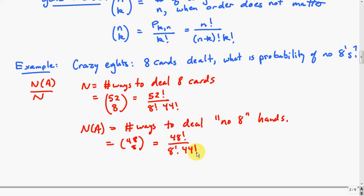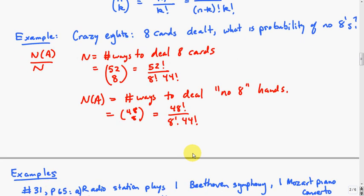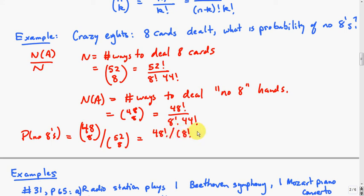We can put these together to get an expression for the whole thing. The probability of no 8's would be 48 choose 8 over 52 choose 8. We can simplify that. It would be 48 factorial over 8 factorial times 40 factorial divided by 52 factorial over 8 factorial times 44 factorial.